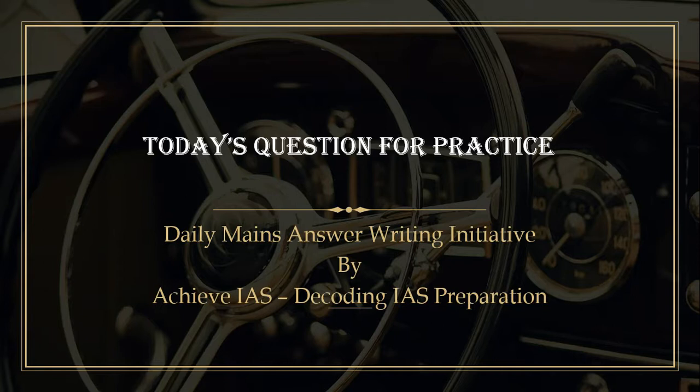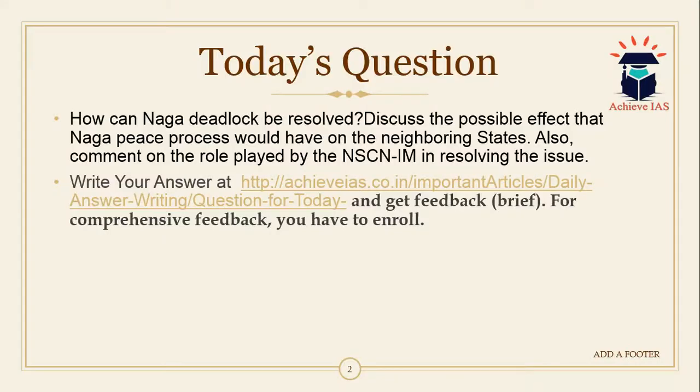In this series, we daily give you a question of which you have to write the answer. Today's question is: How can the Naga deadlock be resolved? Discuss the possible effects that the Naga peace process would have on the neighboring states. Also comment on the role played by NSCN (Isaac-Muivah) in resolving the issue. The word limit for this question is 250 and maximum marks are 15.